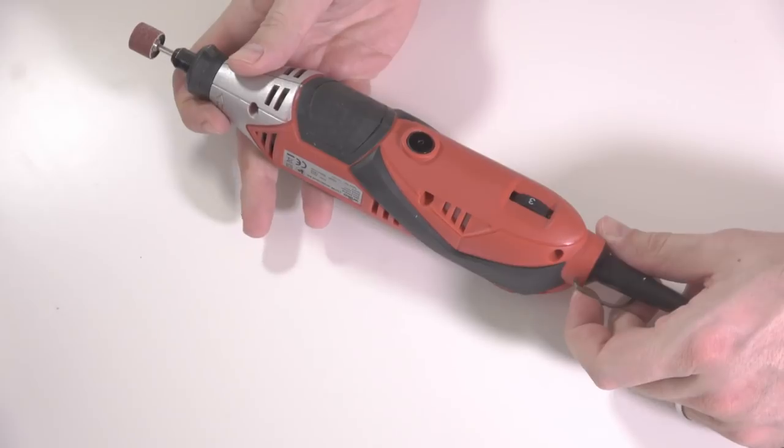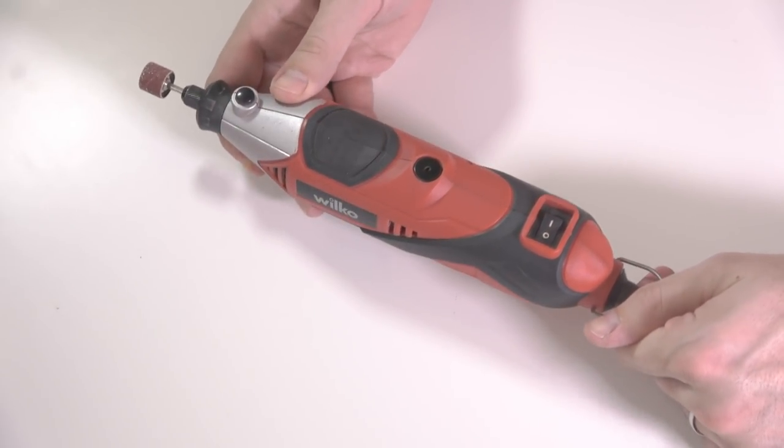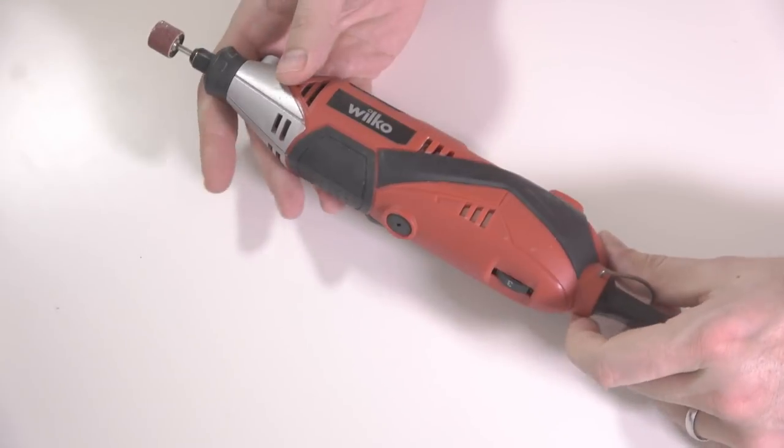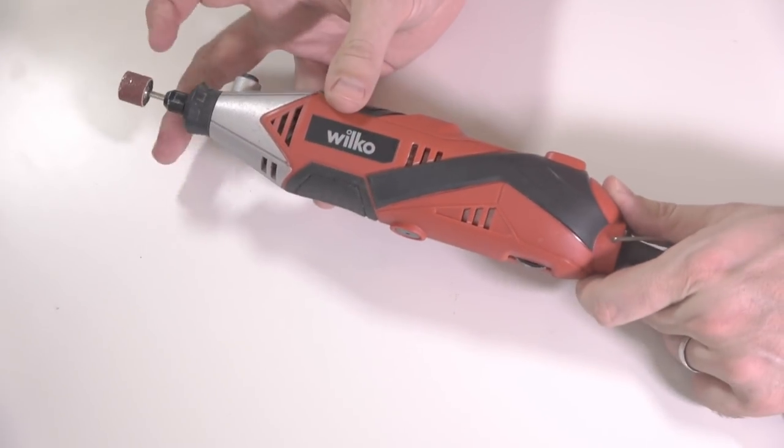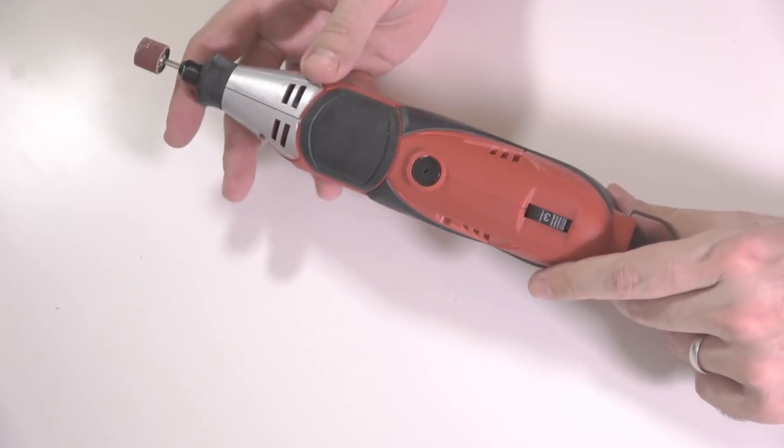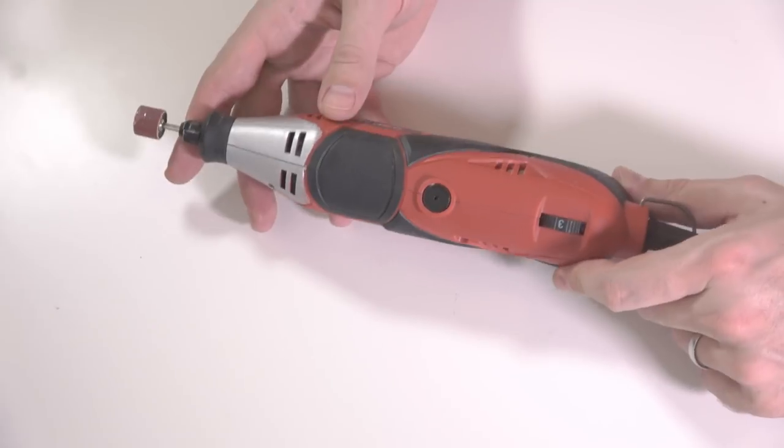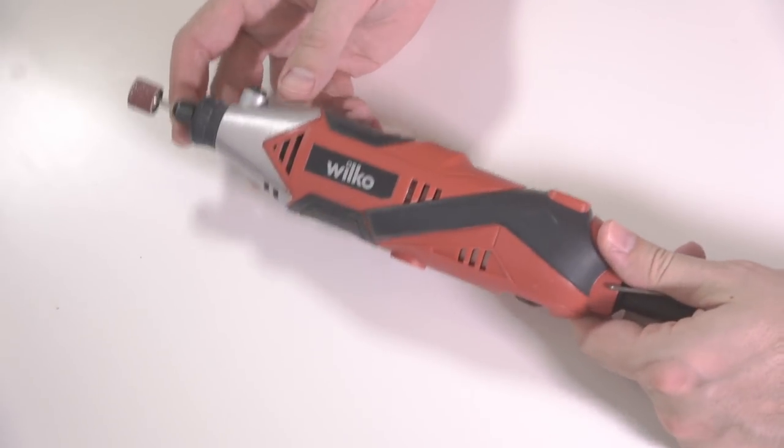Next bit of kit that I think is very useful but certainly not essential is a mini drill. I just got a cheap one from Wilkinson's. They come in a variety of different attachments, you can alter the speed, and they're really useful for filing, sawing, drilling, you name it. This is a very useful time-saving piece of equipment to have in the workshop.